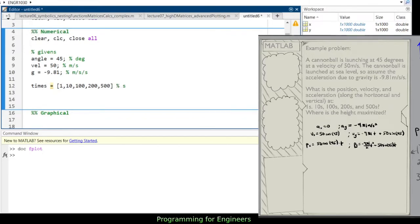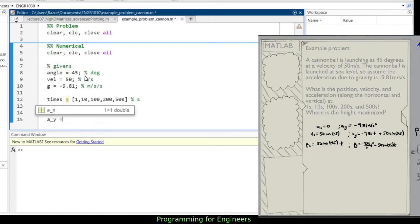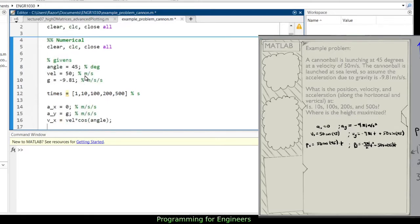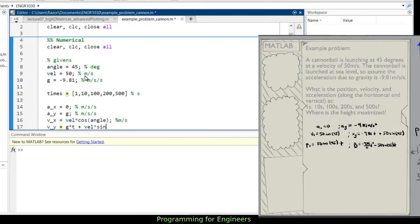So with that, I now have times of 1, 10, 100, 200, 500 in seconds. So using our equations to the right here, we can say ax is 0, ay is negative 9.81, but I'm going to use my givens, so g in meters per second squared.